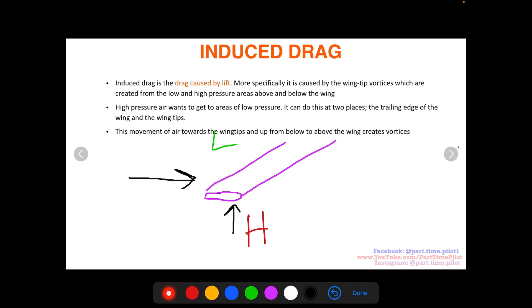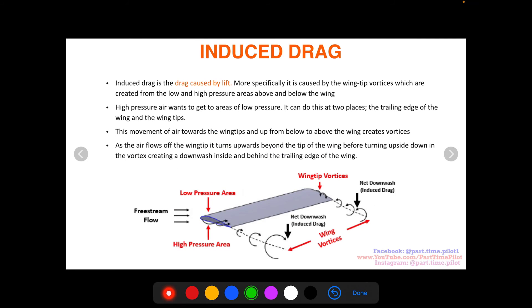What that does is the air, as it comes off the back of the wing at the trailing edge, is going up and back. Then as it trails, it ends up turning back down into these vortices. As the air flows off the wingtips, it turns upwards beyond the tip of the wing before turning back down, as you can see.